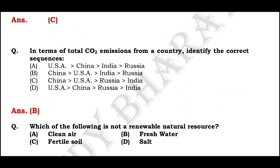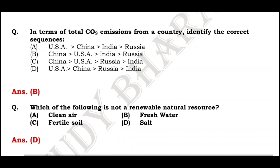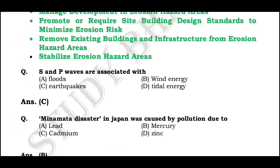Which of the following is not a renewable natural source? S and P waves are associated with and related to earthquakes.